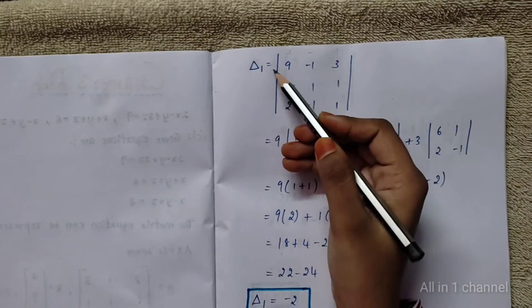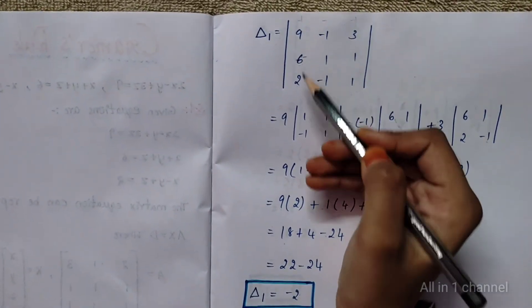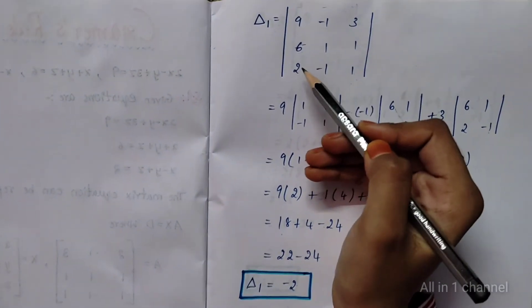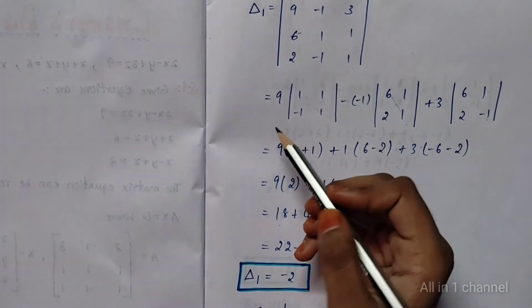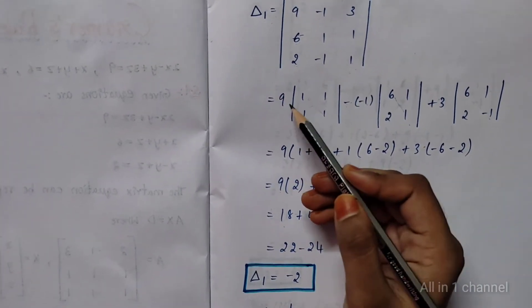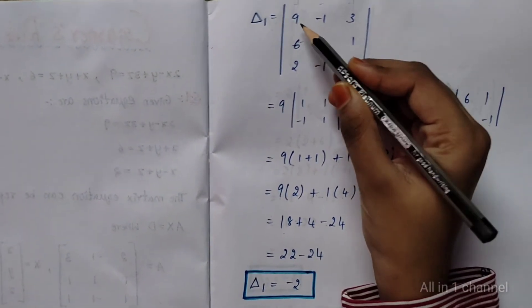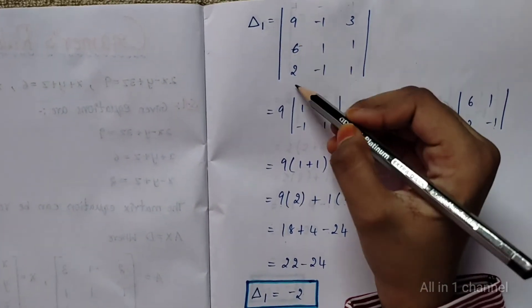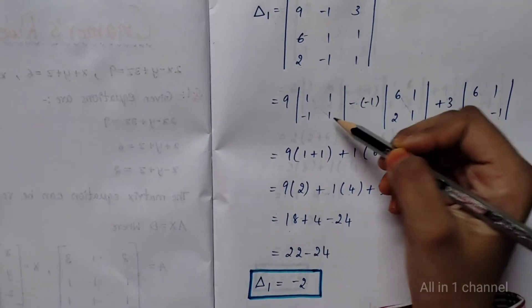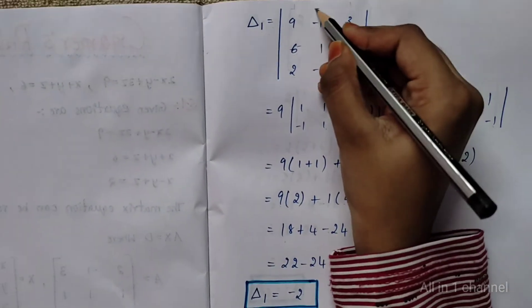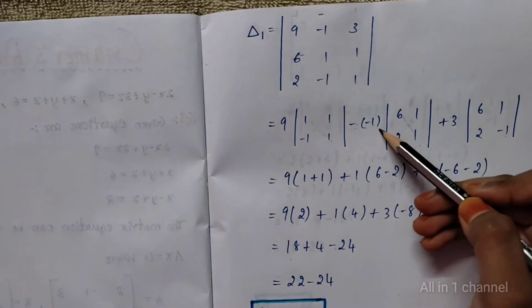We need to find delta 1 value. In place of first column, we have to write 9, 6, 2, with remaining all same. Delta 1 equal to 9. We need to delete first row and first column to get minor: 1, 1, minus 1, 1. Here will be minus, so minus.